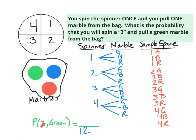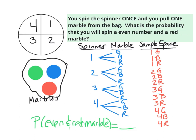The question is: what's the probability that you spin a three and pull a green marble? Looking for outcomes where I get a three and a green marble, there is only one outcome that fulfills this. So the probability of spinning a three and pulling a green marble out of the bag is one out of twelve.